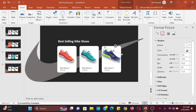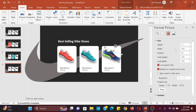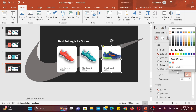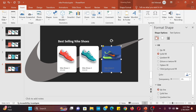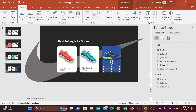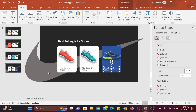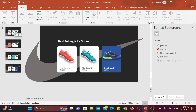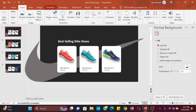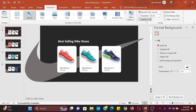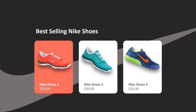Do the same thing for product 3 on slide 4. Go to transitions and select morph transition, then set the transition duration to 0.5 seconds. Click on apply to all to set this morph transition to all slides.